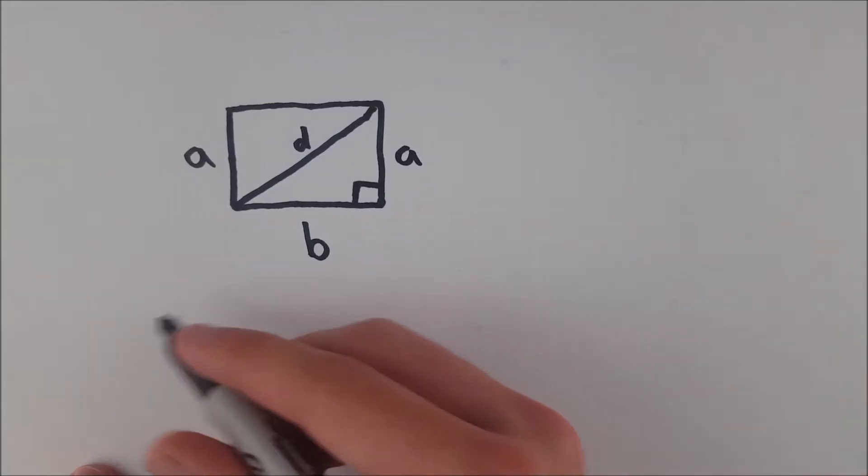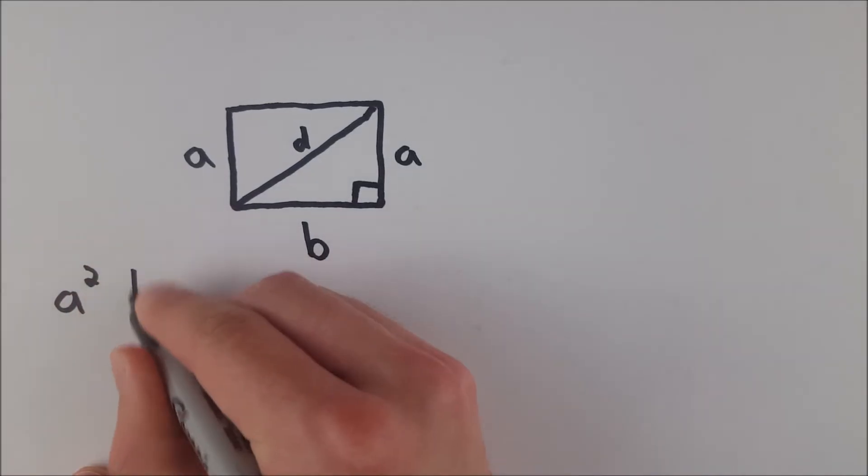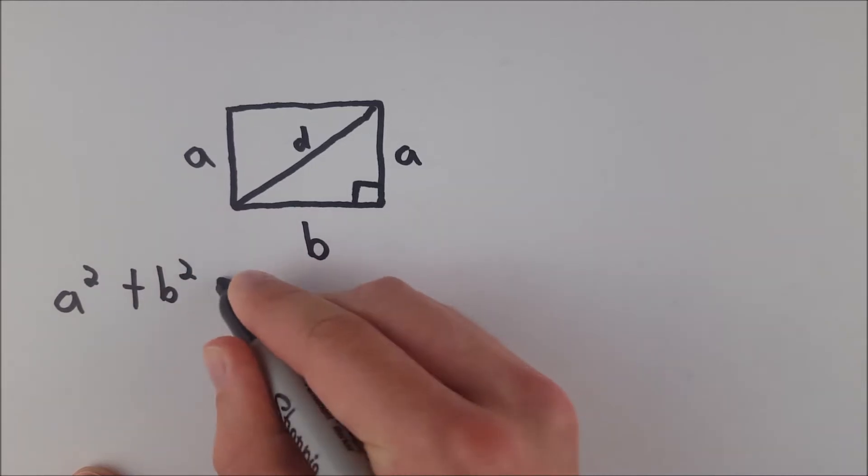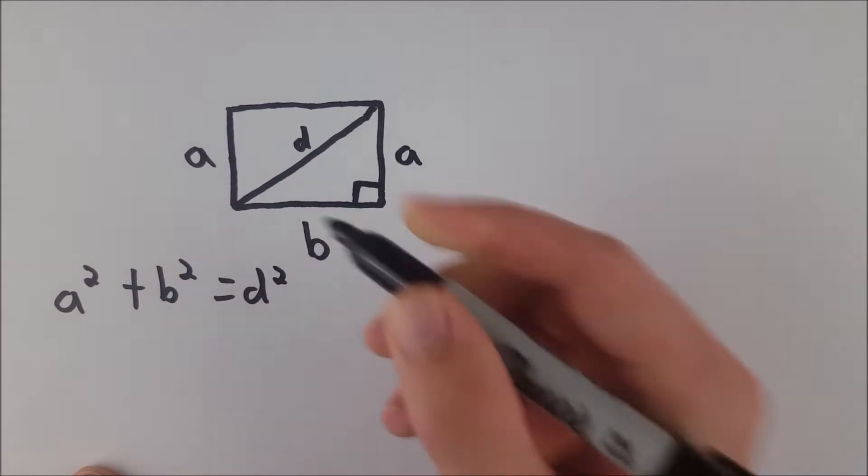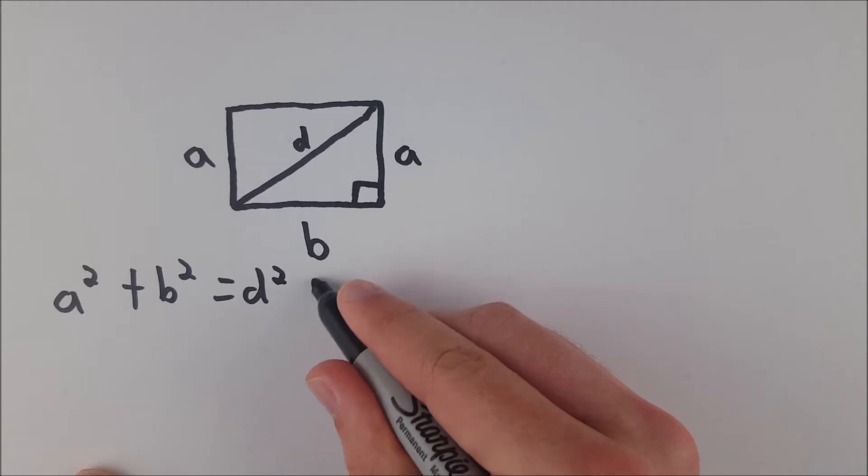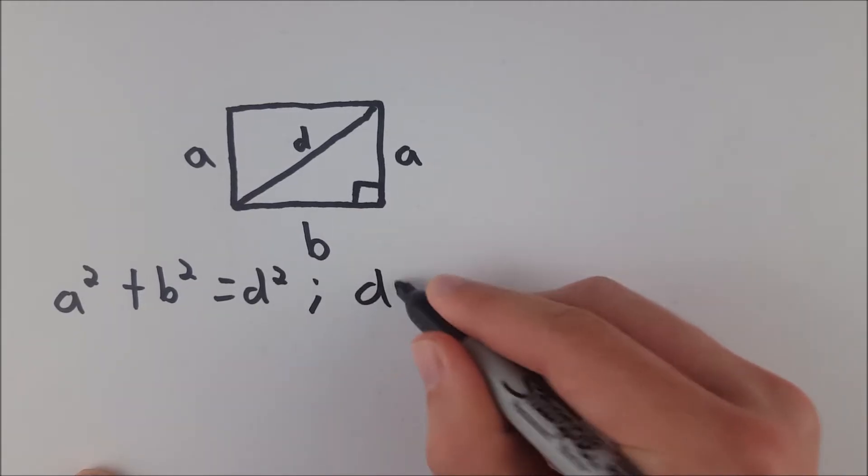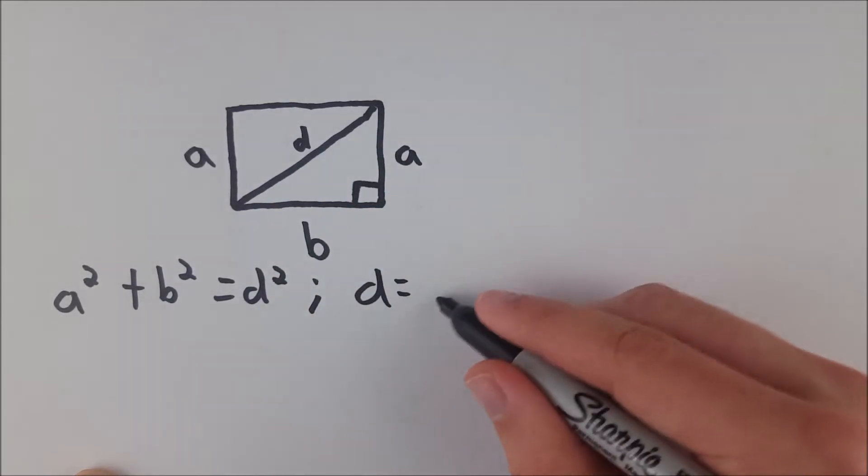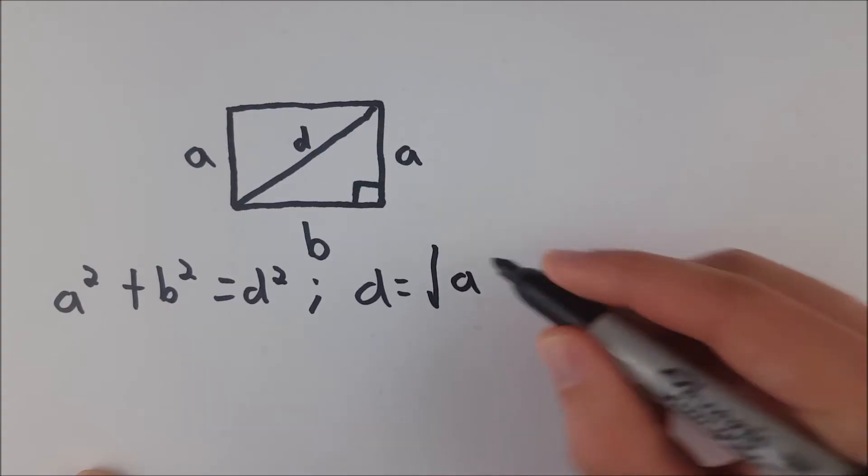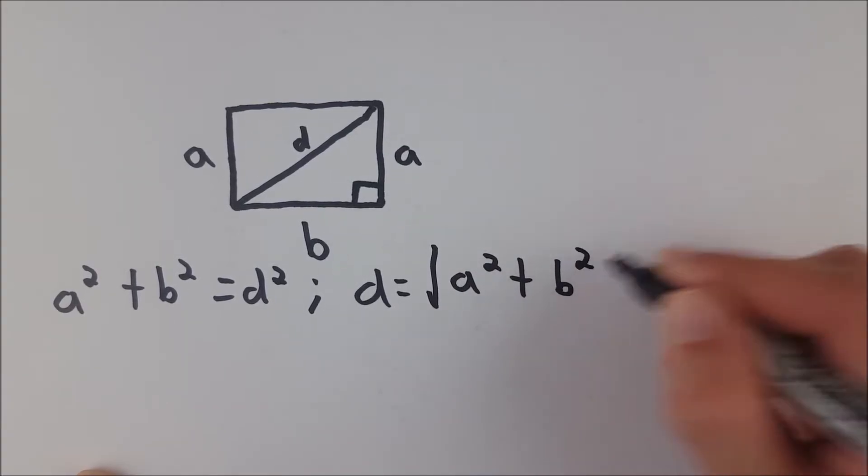So then, using the Pythagorean theorem, we know that a squared plus b squared is equal to d squared, and then we just take the square root of both sides and conclude that d, the length of this diagonal, is equal to the square root of a squared plus b squared.